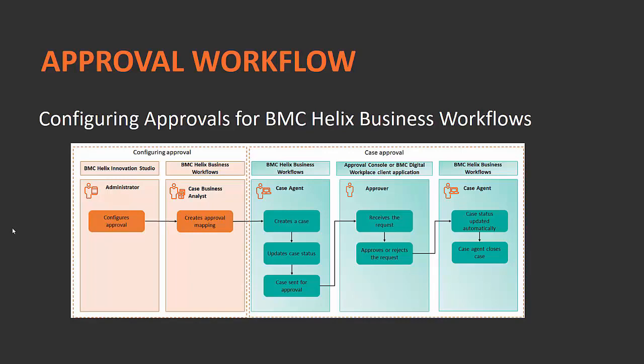The case agent creates a case, updates it, and once submitted it goes to an approver. The approver is the person who receives the approval request, can see the request details, and can approve or reject it. Once the request has been approved or rejected, the case status is automatically updated and the case agent closes the case. This is the end-to-end flow from case initiation until the case is closed.